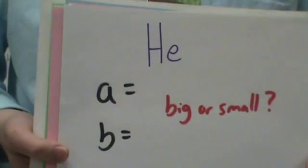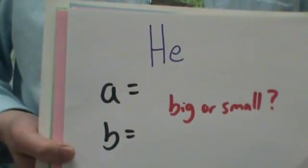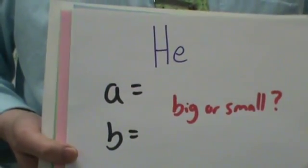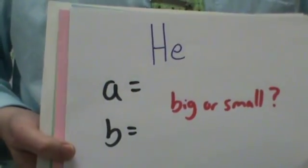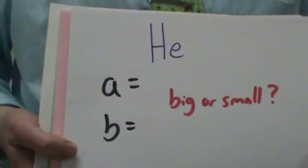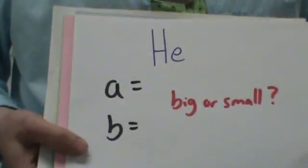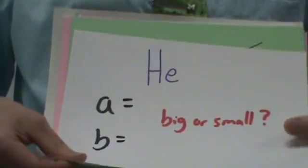Is A big or small? Is B big or small? This is for the Van der Waals corrections. Since helium is tiny, B would be tiny. And since helium has weak intermolecular forces, A would be tiny.